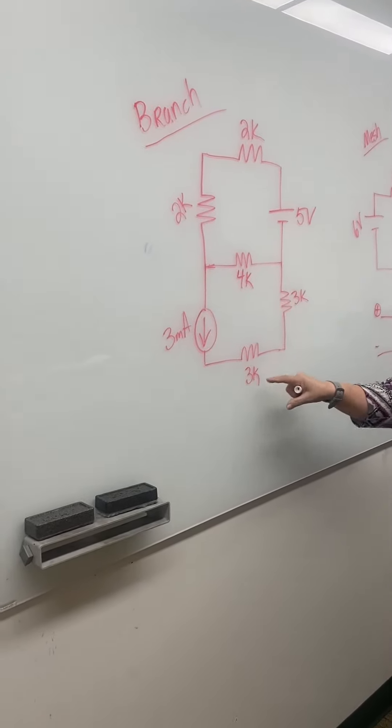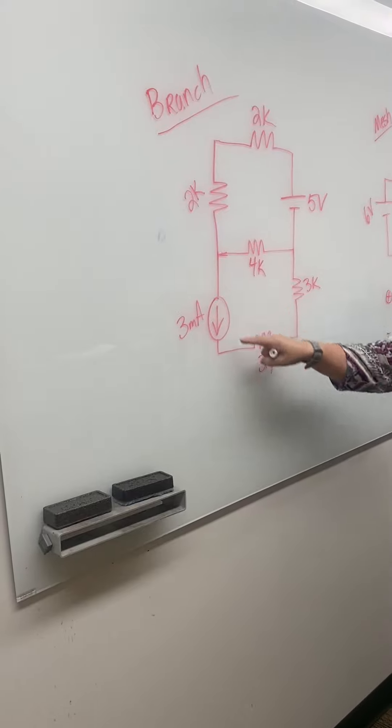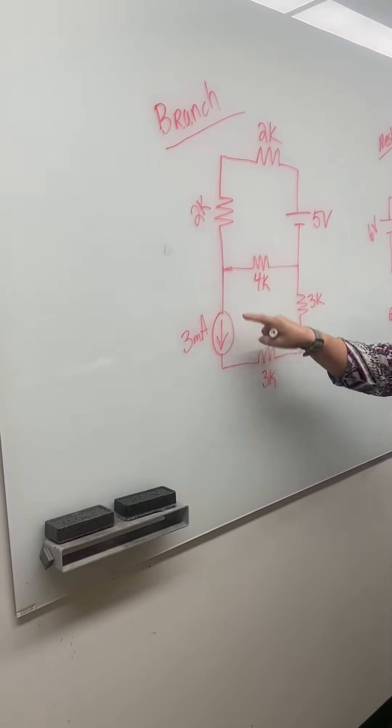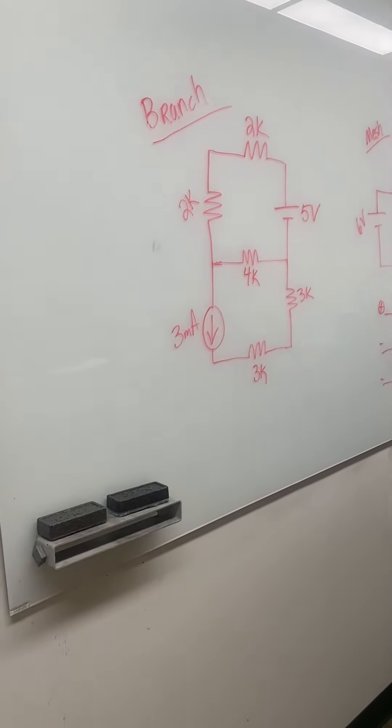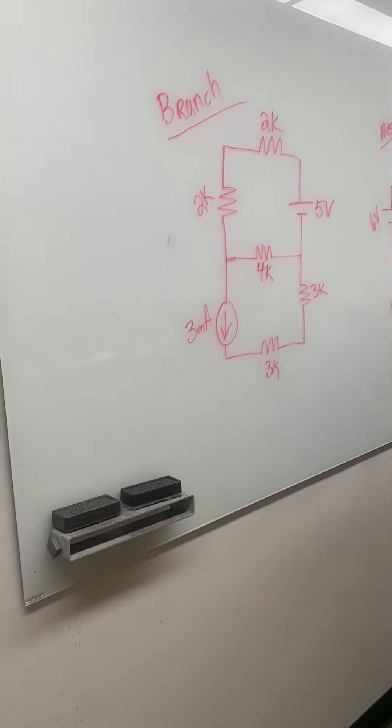These two are not an unknown because current is constant in a series circuit. So we only have two unknowns. We need two equations.